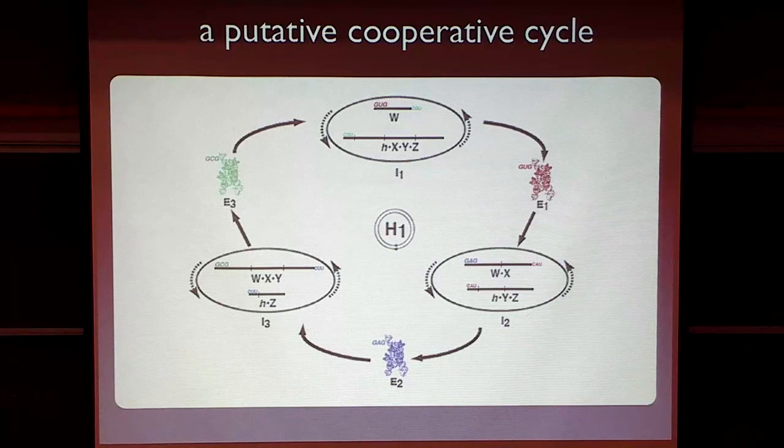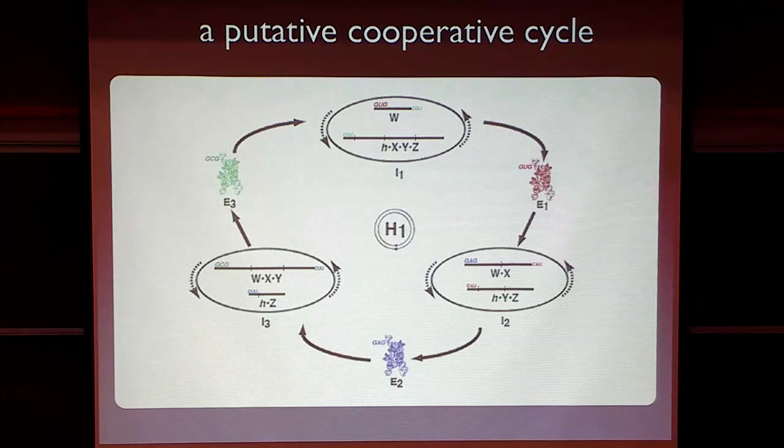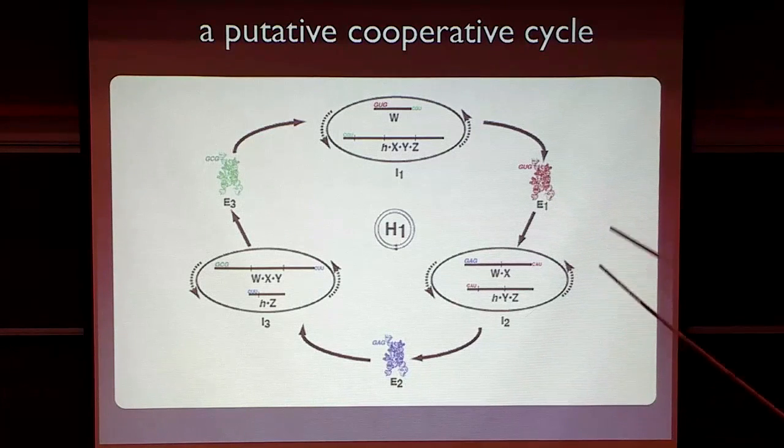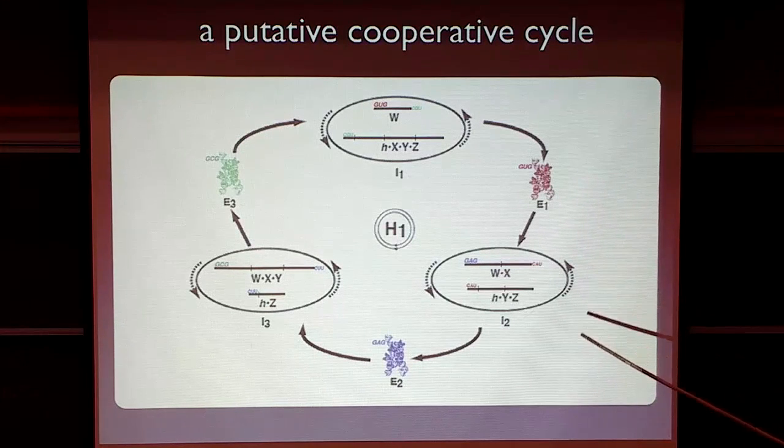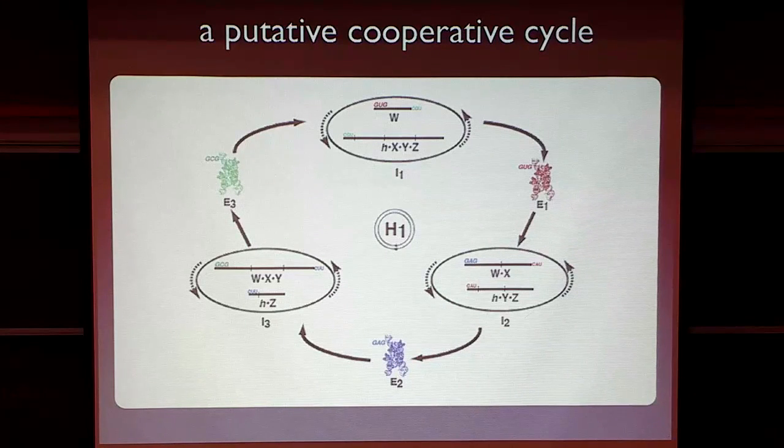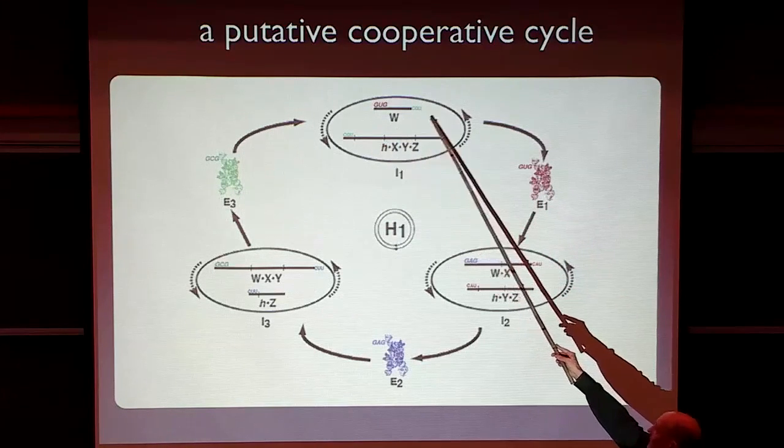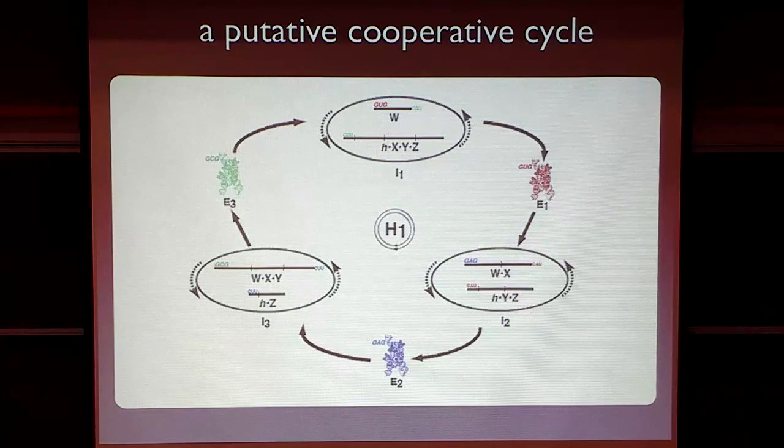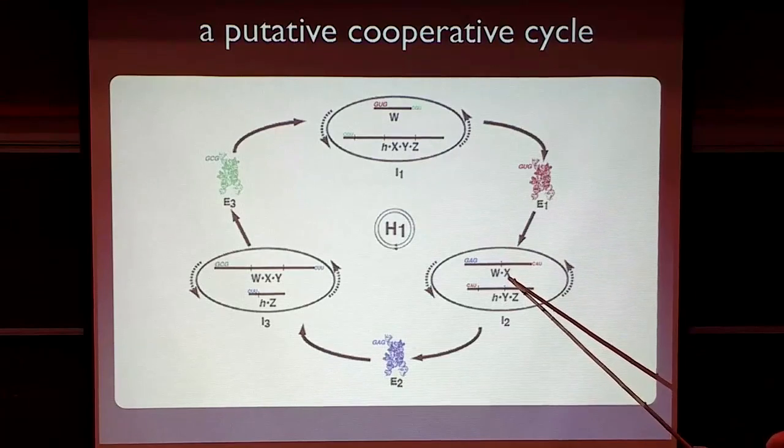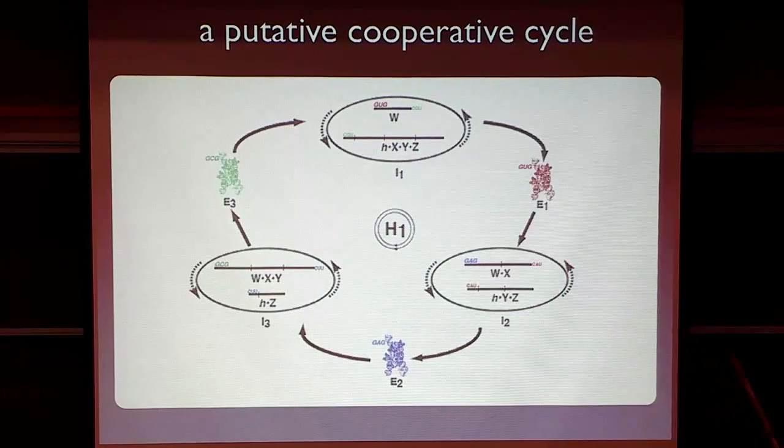So what we did was we created on paper this cooperative network where we broke the ribozyme into two pieces in three different ways, W and XYZ, WX and YZ, and WXY and Z. So far, so good. But then we were dastardly and we forced the IGS and the tags in these systems to be mismatched. And they're mismatched in such a way that this thing could, in theory, put this together, this thing, in theory, could put this together, and this thing, in theory, could put that together, but none of them could put themselves together.